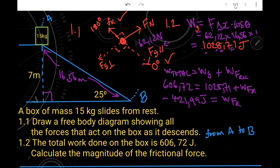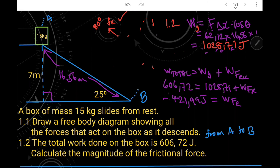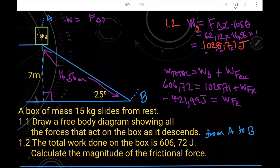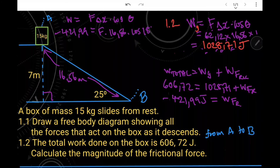The last step is to use the work formula to calculate the magnitude of the frictional force. W = F·Δx·cosθ, so: −421.99 = F × 16.56 × cos180°. Dividing both sides by 16.56 × cos180° gives us the magnitude of the frictional force.